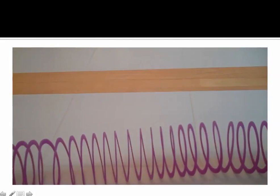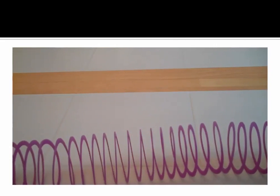In a transverse wave, the particles of the medium, in this case the slinky, move in a direction perpendicular to the motion of the wave. So if I make a wave, the wave itself is moving left to right. But the particles of the medium are moving up and down.